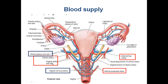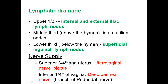The blood supply of the vagina comes from the vaginal artery, which is one of the branches of the uterine artery. It also receives blood supply from the internal pudendal artery, which is a branch of the internal iliac. Venous drainage is via the vaginal venous plexus and the uterine plexus of veins, which drain finally to the internal iliac, common iliac, and inferior vena cava. For lymphatic drainage: the upper one-third of the vagina drains into internal and external iliac lymph nodes; the middle third, above the hymen, drains into internal iliac nodes; the lower third, below the hymen, drains into superficial inguinal group of lymph nodes. Nerve supply: the superior three-fourths are supplied by the uterovaginal nerve plexus, and the inferior one-fourth of the vagina is supplied by the deep perineal nerve, which is a branch of the pudendal nerve.